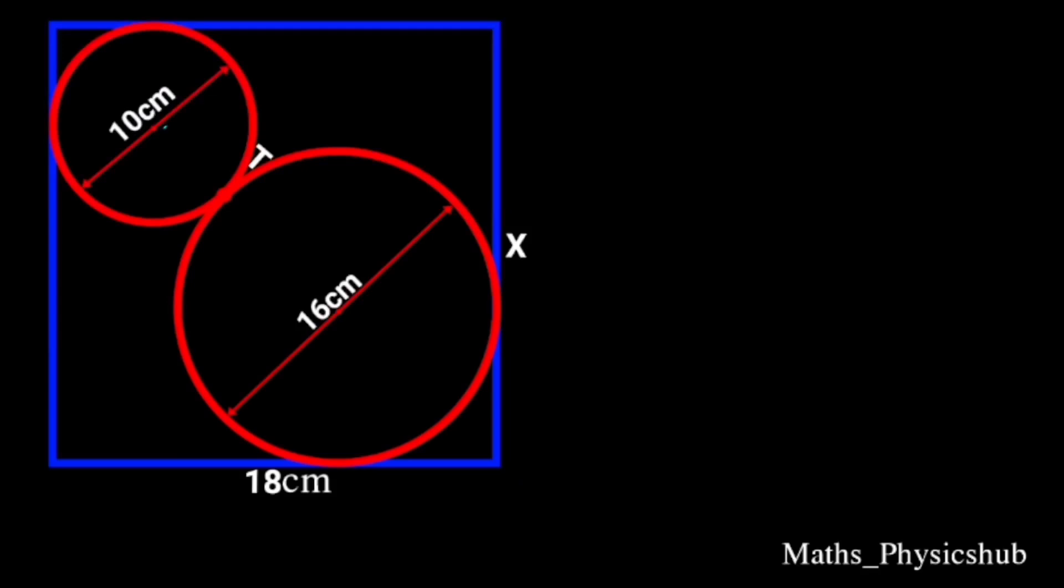This diagram shows two circles of diameters 10 cm and 16 cm touching externally at point T. The two circles are fitted into a rectangle of sides 18 cm and x cm. Calculate x and hence the area of the rectangle. Note that this diagram is not drawn to scale. Let's go ahead and solve.